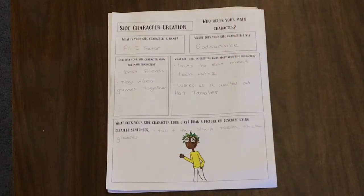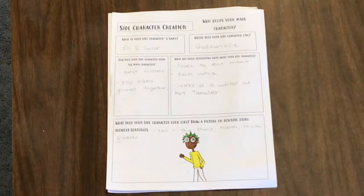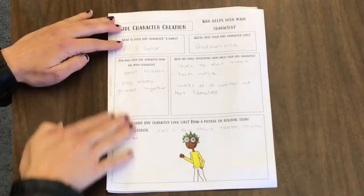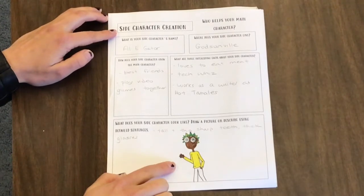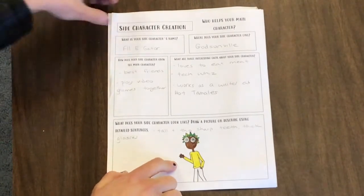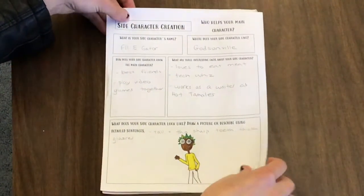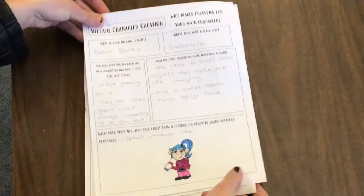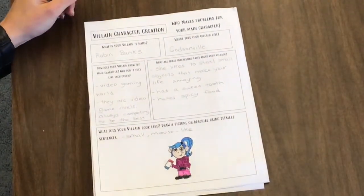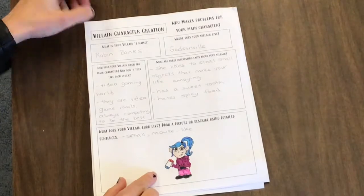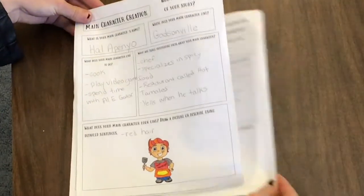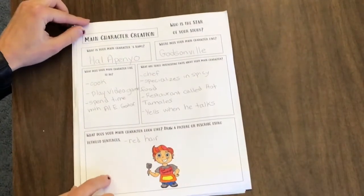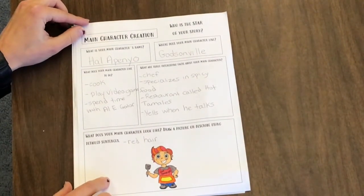So I have finished filling out my three character sheets, all of the details, as well as my little drawing. So this is my finished side character, Al E. Gator. And here is my finished villain, Robin Banks. And of course our main character, Jalapeno.